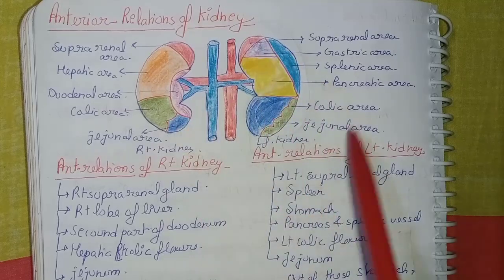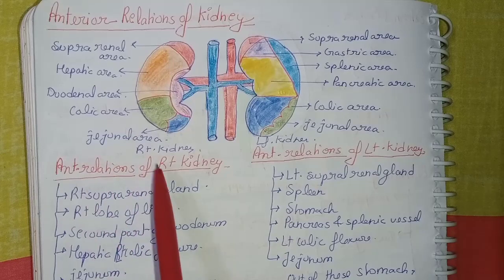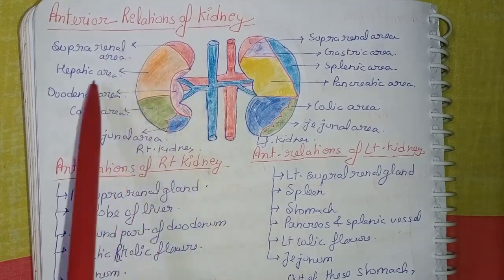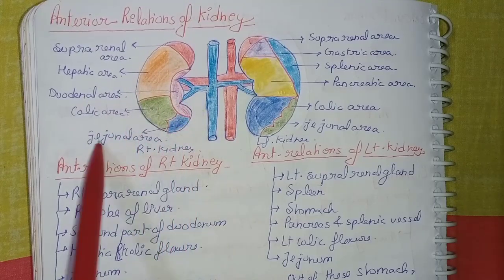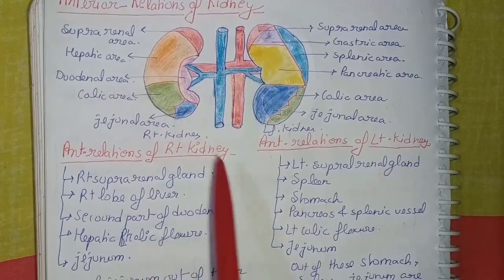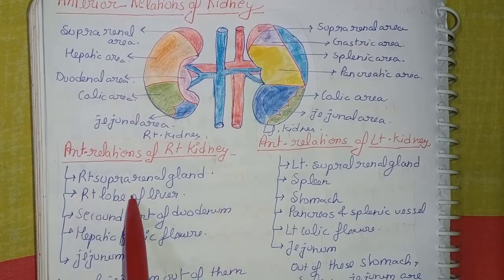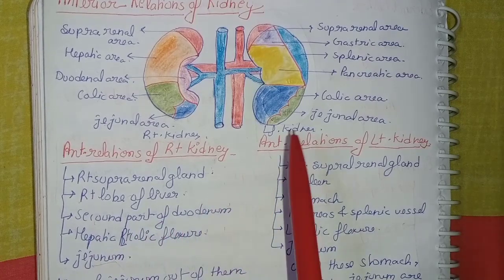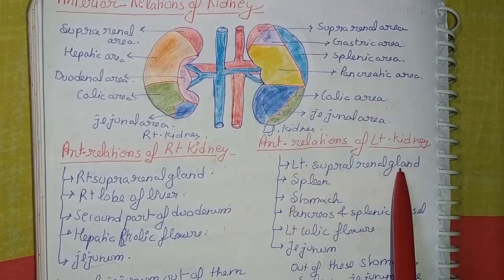Coming to the anterior relations of the kidney: the anterior relation of the right kidney includes the right suprarenal gland from the suprarenal area, the right lobe of liver from the hepatic area, the second part of the duodenum from the duodenal area, the right colic flexure from the colic area, and jejunum from the jejunal area, as seen in the diagram.